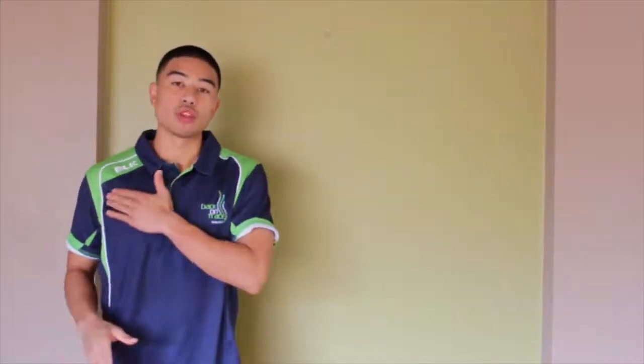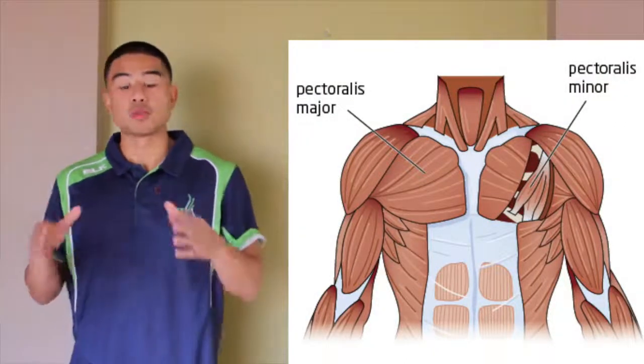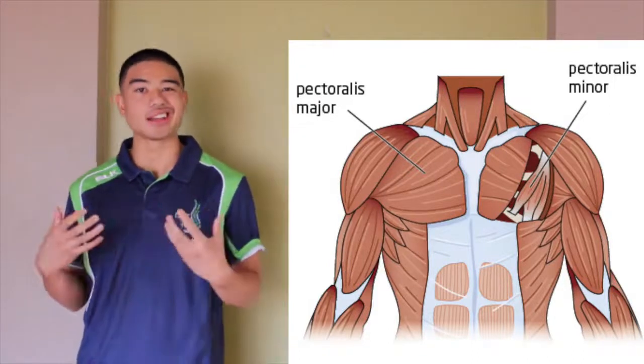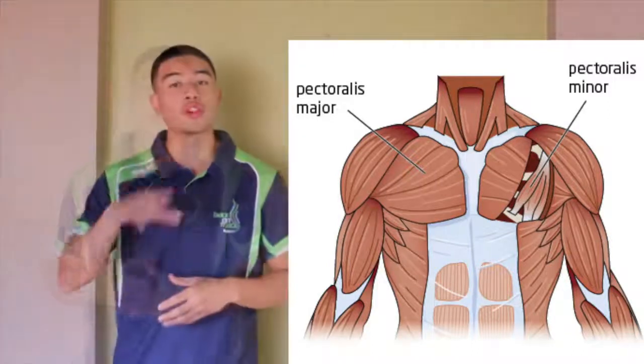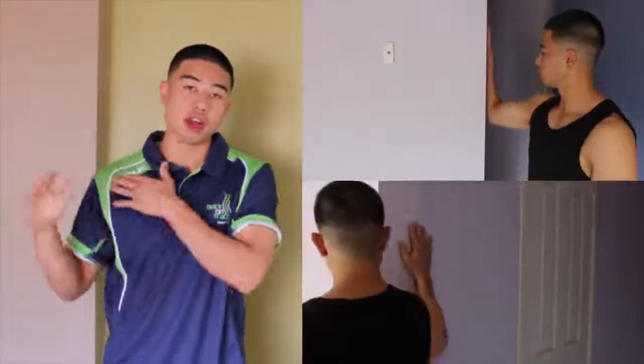The last stretch you want to do is your chest stretch. We're targeting what they call the pectoralis minor and major, which are the muscles in your chest. Because we're in a very forward posture when sitting, these muscles tend to get tight and lead to those rounded shoulders. Find the edge of a door or a wall, put your hand up about 90 degrees with your elbow in line with your shoulder. To stretch the right chest, twist towards the left and you should feel that tension right there.